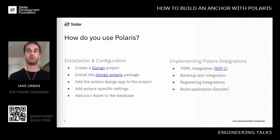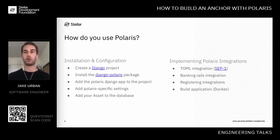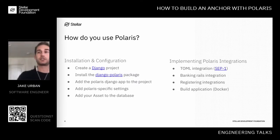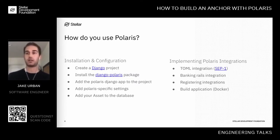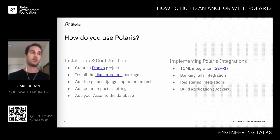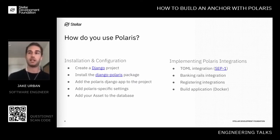There are a few steps involved. We're going to create a Django project — this talk assumes you're familiar with Django and Stellar Ecosystem Proposals. We'll install Django and the django-polaris package, add the Polaris Django app to the project, add Polaris settings and configuration options, and finally register and add our asset to the database. The asset we're going to anchor is the Stellar Reference Token (SRT) — a fake token on testnet used as a demonstration to show how people build anchor services around an asset.